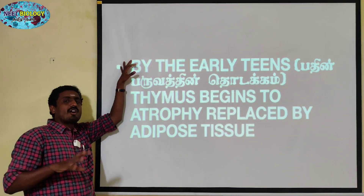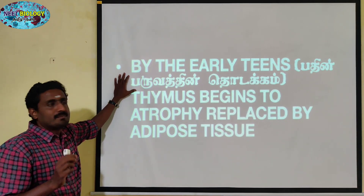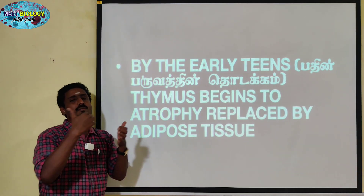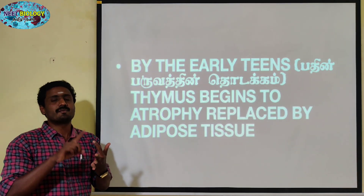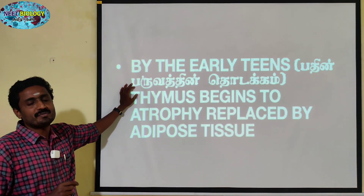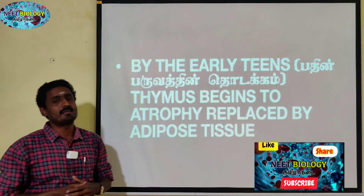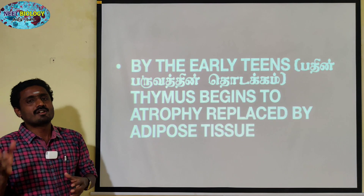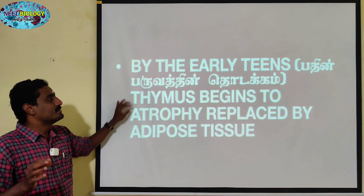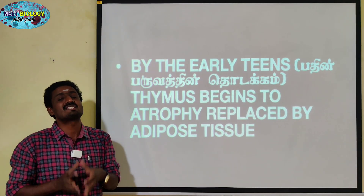By the early teens — teenage, around 12, 13, 14, 15 — the thymus begins to atrophically degenerate.